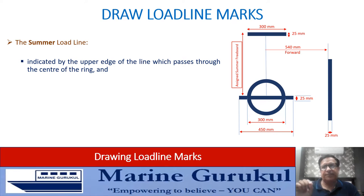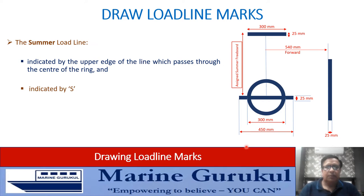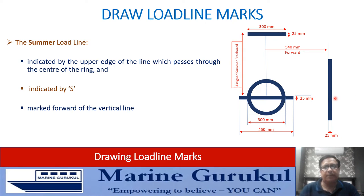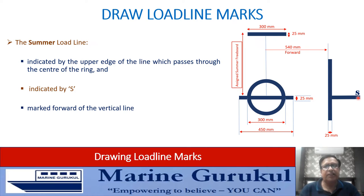The summer load line mark is indicated at the same level as the 450 mm horizontal line — the upper edge of that line, which is also the center of the ring, is the level of the summer mark. This is because the assigned summer freeboard brings us to the summer draft. The summer load line mark is indicated by the alphabet S, marked forward of the vertical line, 230 mm long and 25 mm thick. This mark must not be submerged when the vessel is floating or sailing in the summer zone.